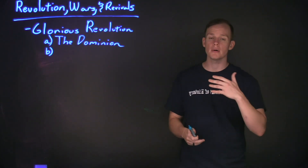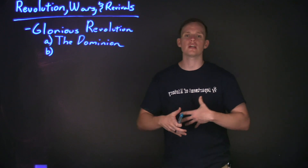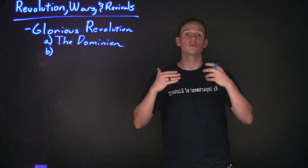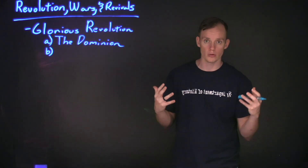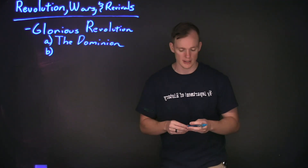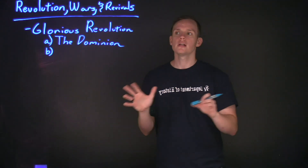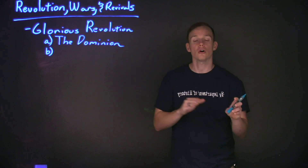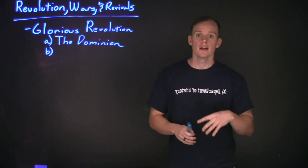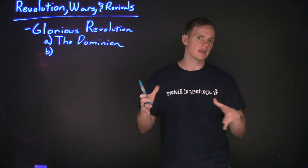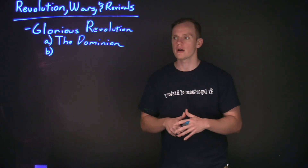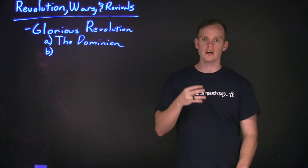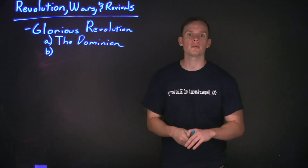Especially when we talk about the Enlightenment a little bit later on, the Glorious Revolution is going to influence political ideas that give birth to what we recognize today as modern liberalism. The Glorious Revolution, as it was rocking England to its core, also had a tremendous impact on the colonies. In the midst of King James II's centralization of power, it extended over to the American colonies as well.